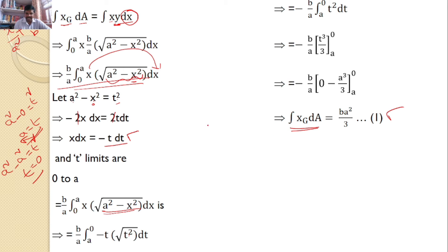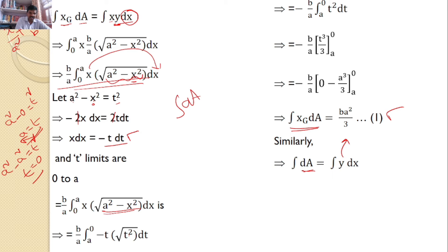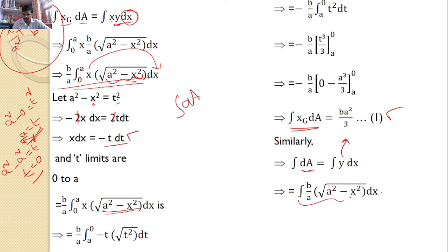Next, let us calculate ∫dA. Similarly, dA = Y · DX, where Y = (B/A) · √(A² − X²). So ∫dA = ∫₀ᴬ (B/A) · √(A² − X²) · DX. I will solve from the fundamentals.